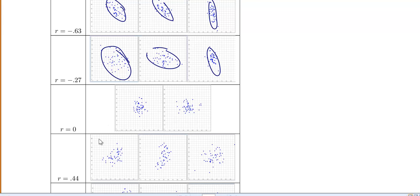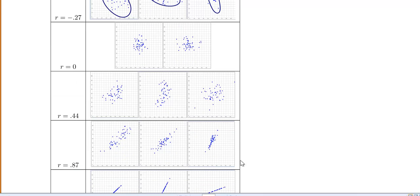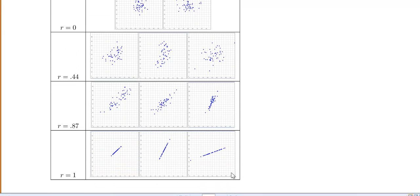R equals zero. R equals 0.44. R equals 0.87. And at r equals 1, we're back to having points exactly on a line.